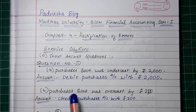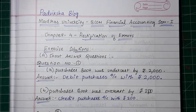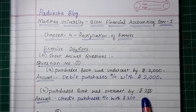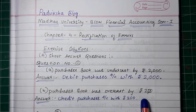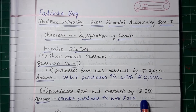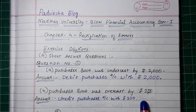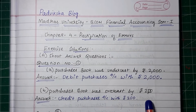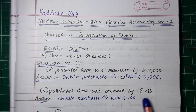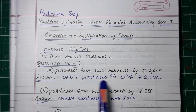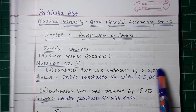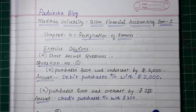Part B: the purchase book was overcast by Rs. 200. Overcast means the same amount was recorded extra - 200 rupees extra. So the purchase book has 200 extra, so we will credit it. We will get 200 minus, so we credit the purchases account with Rs. 200.